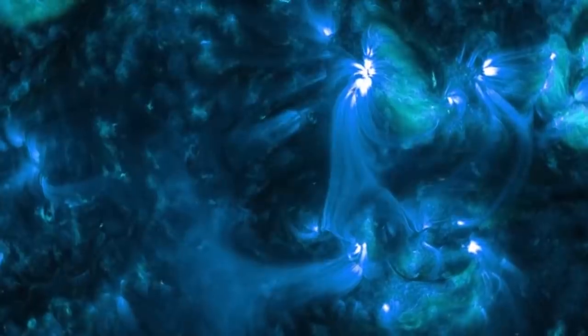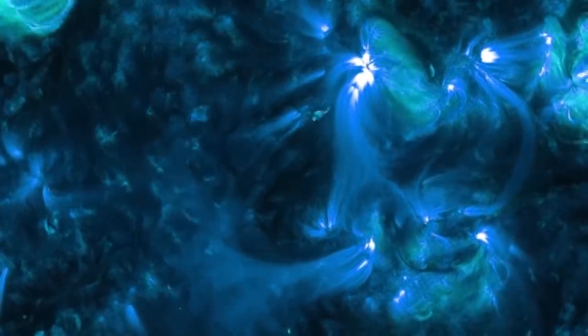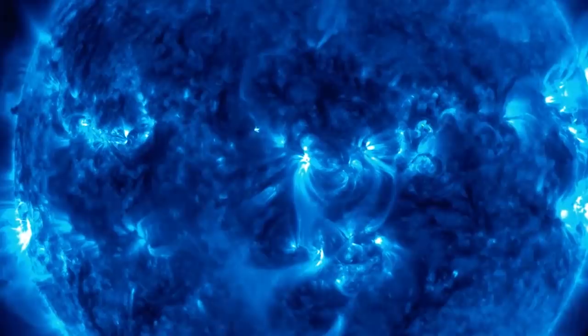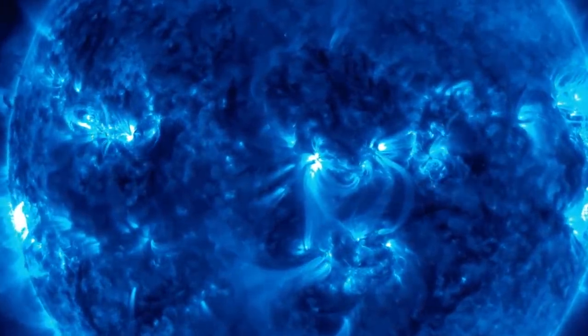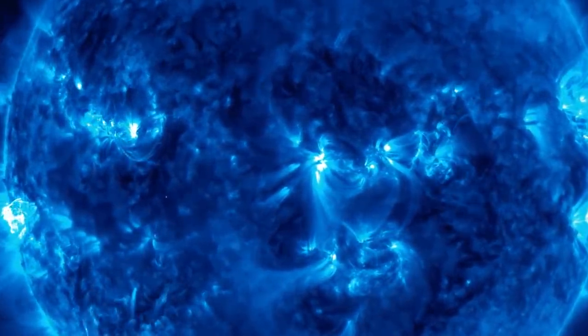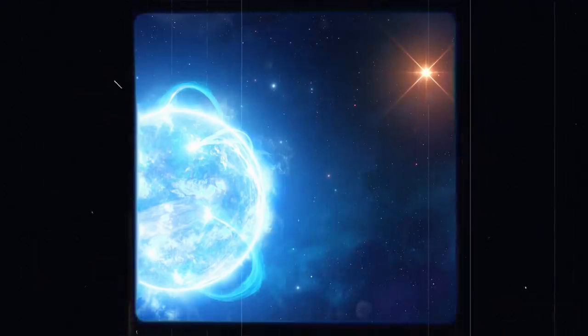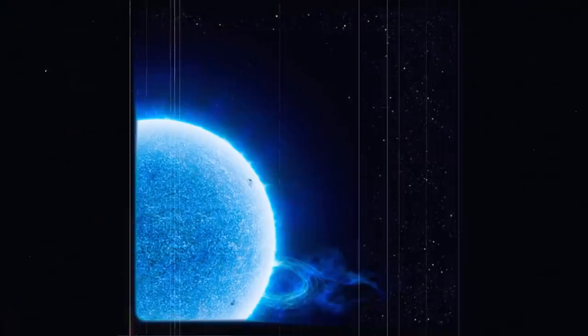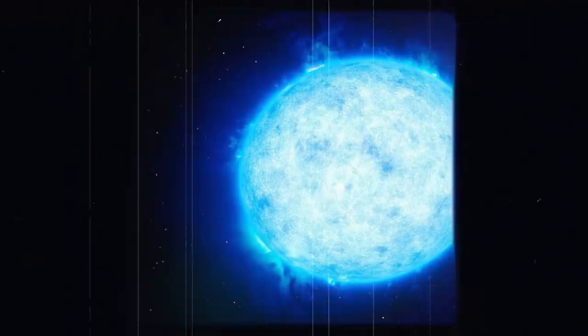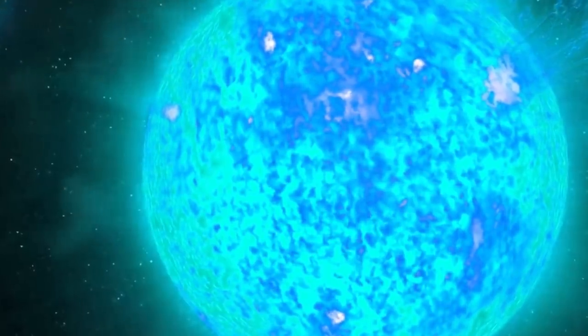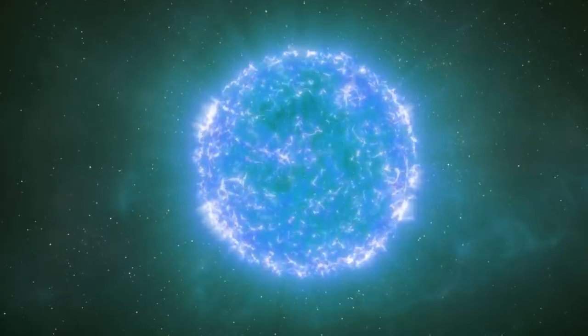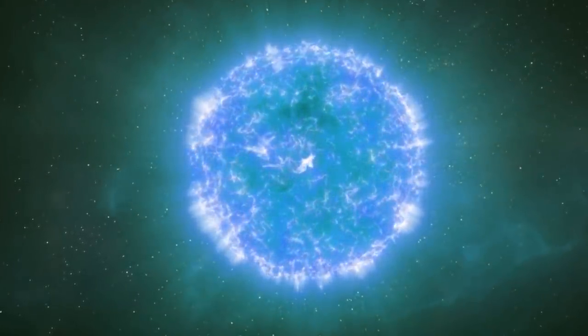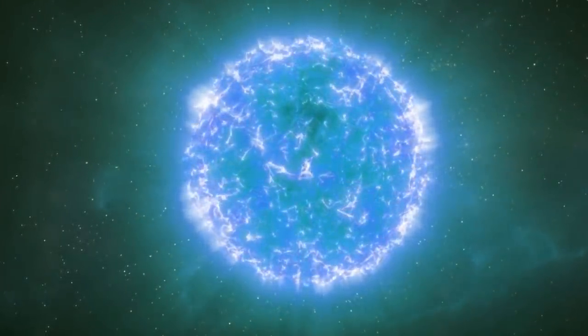WR102 possesses strong stellar winds even for a Wolf-Rayet star. They are currently blowing around a Sun's worth of mass from the surface of the star every 100,000 years. That means WR102 loses hundreds of millions of times the mass of the Sun per year. Although this may not seem like much for a big star, consider that WR102 would be completely gone in less than 2 million years if it continued at this rate.